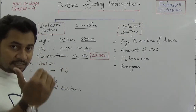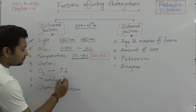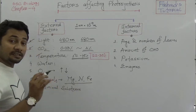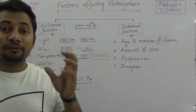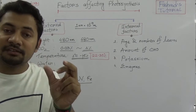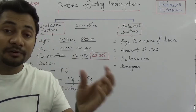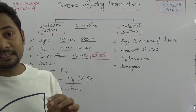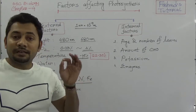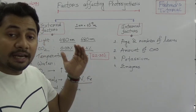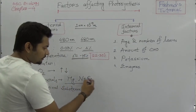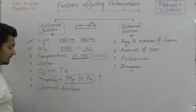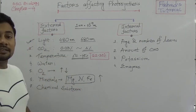Minerals are also an external factor. Magnesium, nitrogen, and iron are required for the synthesis of chlorophyll — both chlorophyll a and chlorophyll b require these minerals. If there is any scarcity or lack of these minerals, the photosynthesis process will be affected. Conversely, if these minerals are available in the soil, the rate of photosynthesis will be higher.